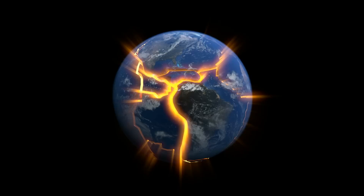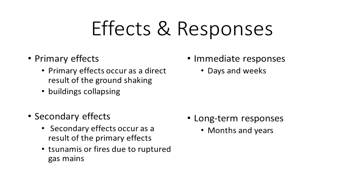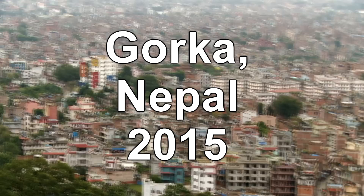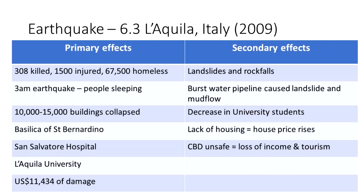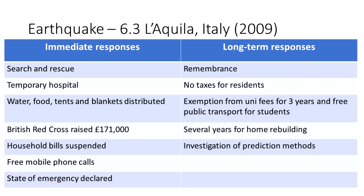Then we move on to tectonic hazards. You need a couple of case studies — an earthquake or a volcano — with a brief understanding of how they work, as well as the primary and secondary effects and the immediate and long-term responses. The case studies I looked at are Italy 2009 and Nepal 2015. You really need to know specific numbers: figures, death rates, how many people were injured or made homeless, and what specific responses were taken.